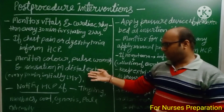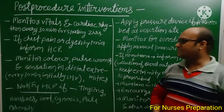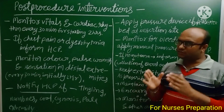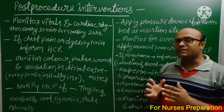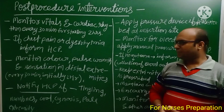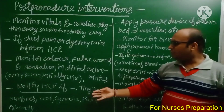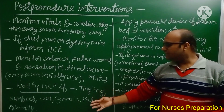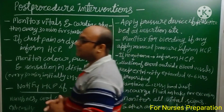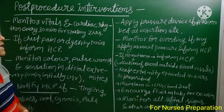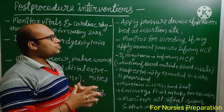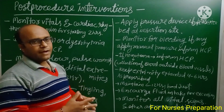Monitor color, pulse, warmth, and sensation in the distal extremities every 30 minutes during the initial 2 hours. If any abnormality is observed in the distal extremities such as tingling, numbness, coolness, or pain, inform the healthcare provider immediately. Apply pressure devices at the insertion site if prescribed.